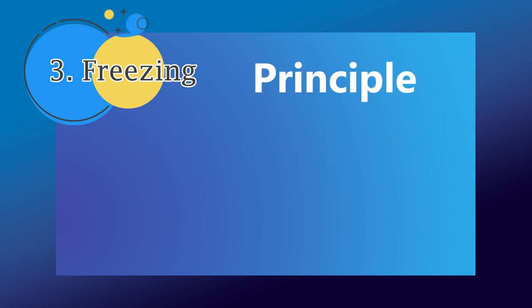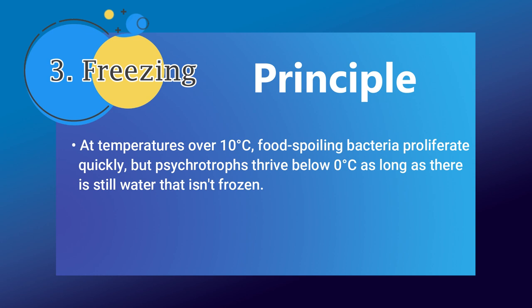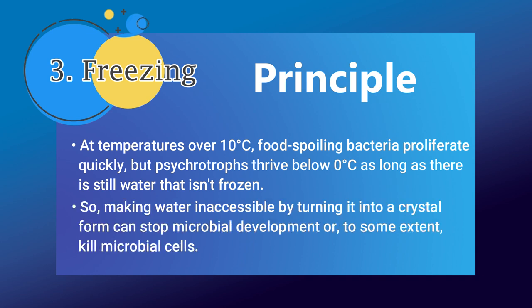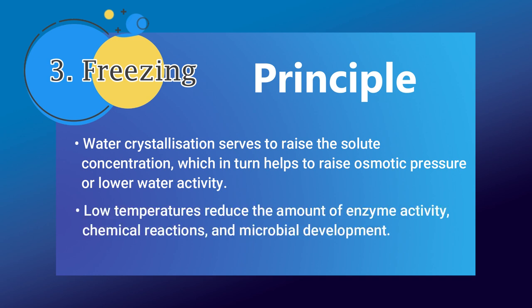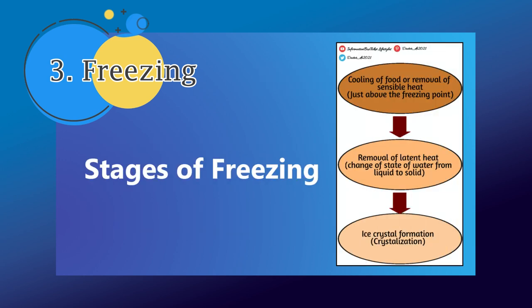The principle of freezing: at temperatures over 10 degrees Celsius, food spoiling bacteria proliferate quickly. Psychrotrophs thrive below 0 degrees Celsius as long as there is still unfrozen water. Making water inaccessible by turning it into crystal form can stop microbial development or to some extent kill microbial cells. Water crystallization also raises solute concentration, which in turn raises osmotic pressure or lowers water activity. Low temperatures reduce the amount of enzyme activity, chemical reactions, and microbial development.